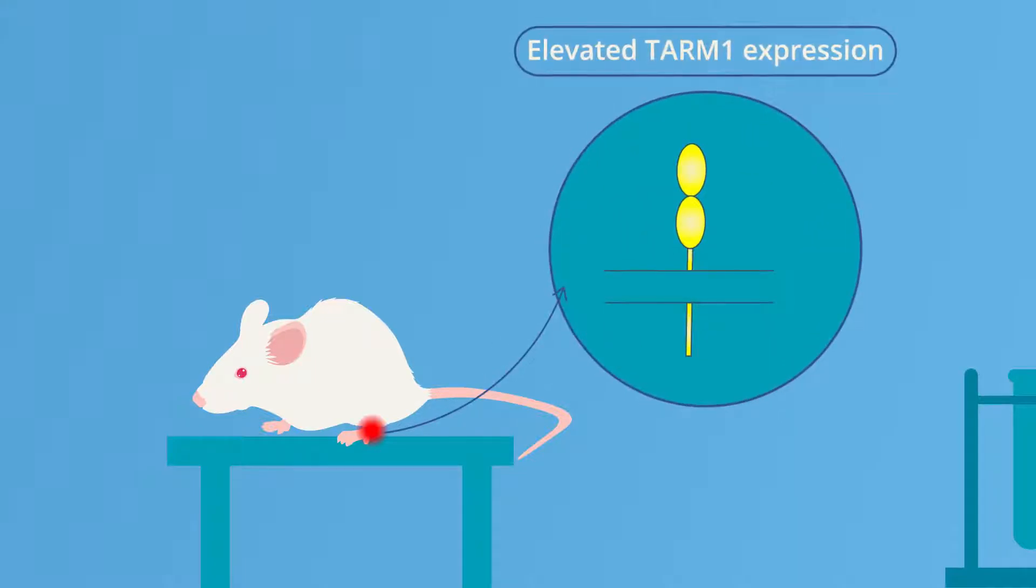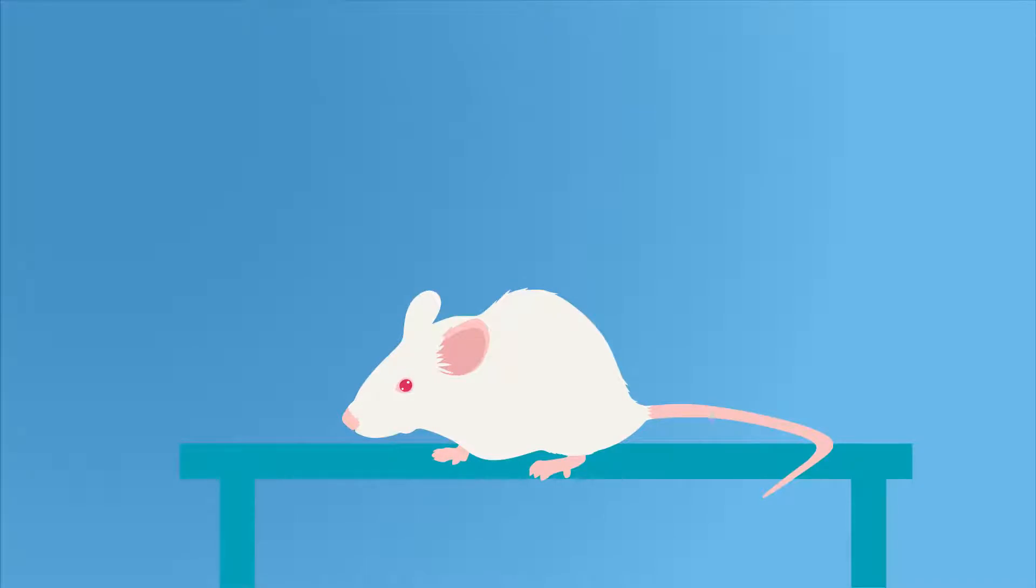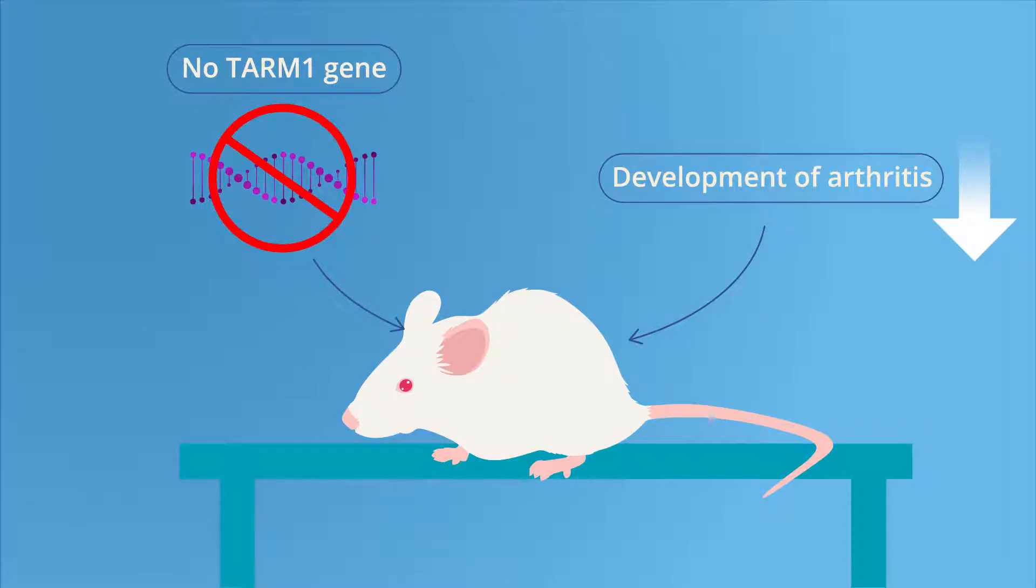They found that TARM1's expression was elevated in the joints of mice with arthritis. Interestingly, they saw that the development of arthritis was suppressed in mice lacking the TARM1 gene.